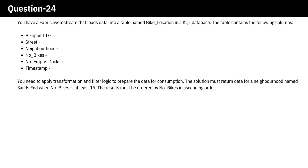You have a Fabric event stream that loads data into a table named Bike Location in a KQL database. The table contains the following columns: Bike Point ID, Street, Neighborhood, Number of Bikes, Number of Empty Docks, and Timestamp. You need to apply transformation and filter logic to prepare the data for consumption. The solution must return data for a neighborhood named Sands End when Number of Bikes is at least 15. The results must be ordered by Number of Bikes in ascending order.